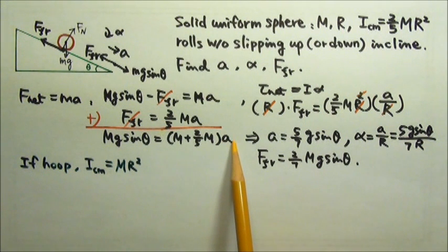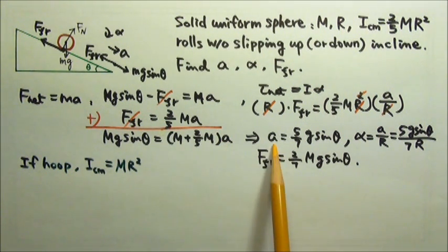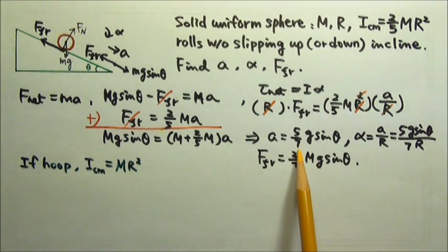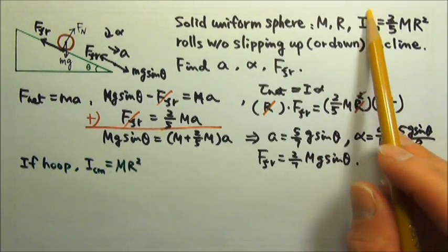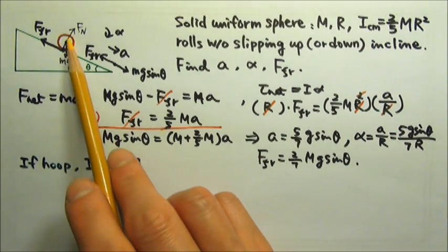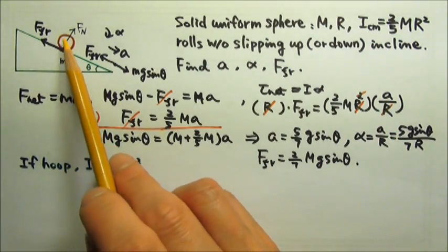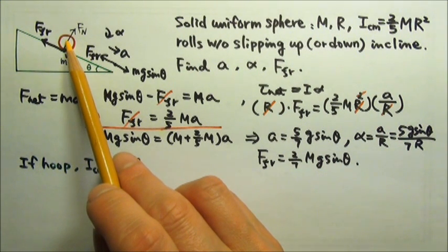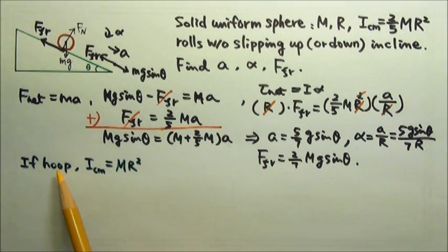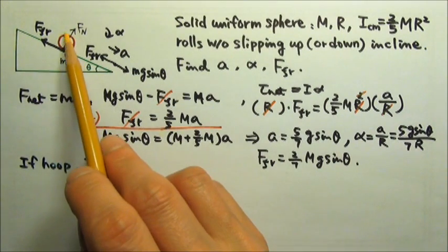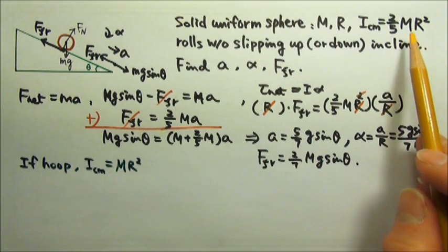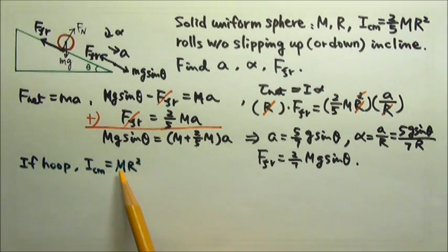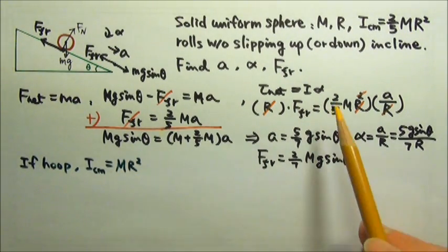Which means when I put m r squared over here without the 2 fifths, this part would be m, this part would be m. Which means I would end up with an a, the acceleration that is less than this. It's going to become 1 half g sine theta instead of 5 sevenths. The rotational inertia depends on how far away the mass distribution is from the rotational axis. For a hoop, all the mass is concentrated on the rim, so it has a larger rotational inertia than that of a sphere.